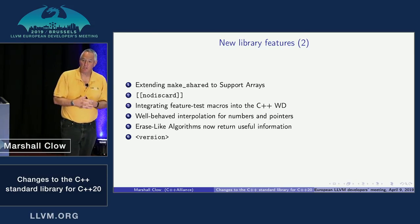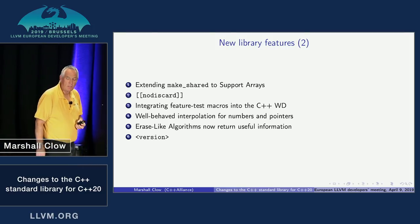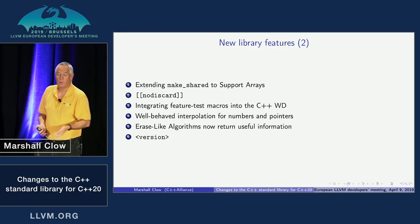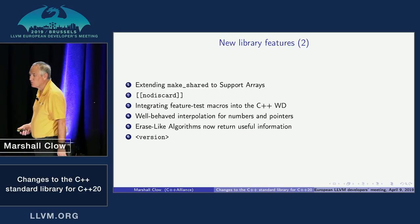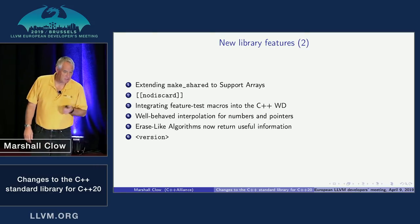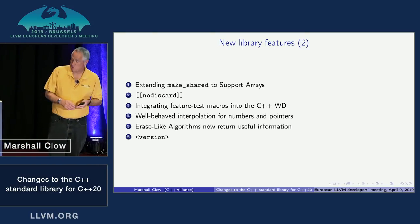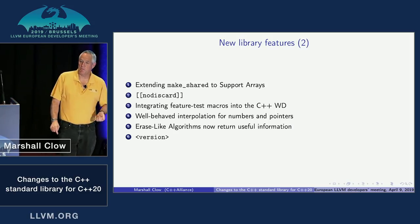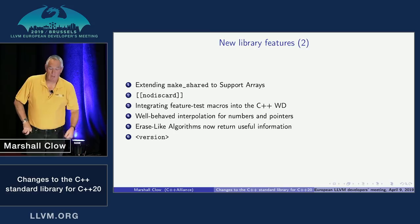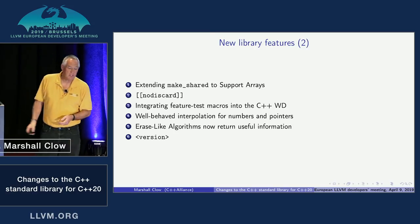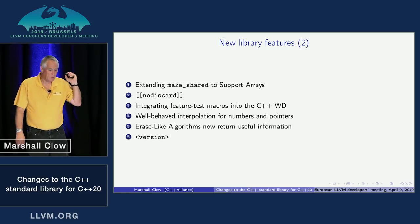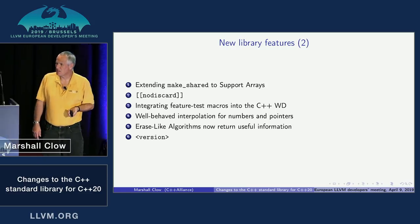We've integrated a bunch of feature test macros into the working draft, so you can check whether a particular version of libc++ or another standard library supports a specific feature. We also added std::midpoint — give it two integers and it returns the value in the middle. This is surprisingly hard to get right, and I'll have a whole talk about std::midpoint at CppCon in September.